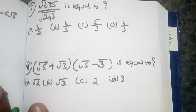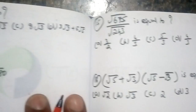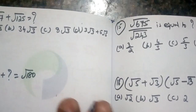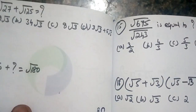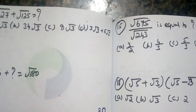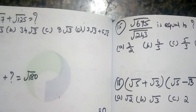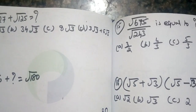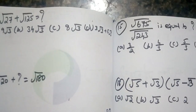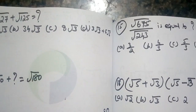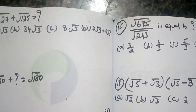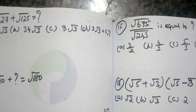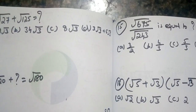Question number 13: root 27 plus root 125. This is what we will do.